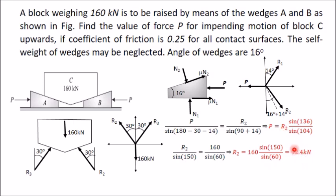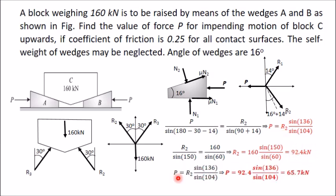Substituting R2 = 92.4 kN into the earlier equation from the free body diagram of wedge B: P = 92.4 × sin136° / sin104° ≈ 65.7 kN. Applying this force P, you can just lift block C in the upward direction.